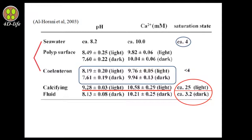Under the calicoblastic layer, the aragonite saturation state increases from 3.2 in the dark to as high as 25 in the light, and the pH increases to 9.3. This elevated condition drives the precipitation of calcium carbonate in the skeleton. Unfortunately, as a result of ocean acidification, this chemical balance is disrupted. Climate change and ocean acidification can have a deep effect on coral calcification and can halt calcification if there is a large enough decrease in pH.